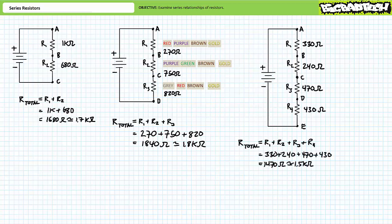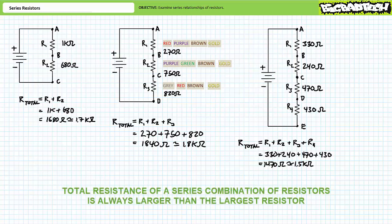For our third circuit, the source sees a summation of 330, 240, 470, and 430 ohms for a total of 1470 ohms, or more appropriately, roughly 1.5 kilo-ohms. Note how the total resistance of a series combination is always larger than the largest resistor. If your calculations suggest otherwise, you are doing it wrong. Series resistances always add up.